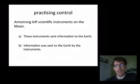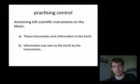Moving on. Armstrong left scientific instruments on the moon. These instruments sent information to the Earth. Information was sent to the Earth by the instruments. Here, clearly, example A, these instruments sent information to the Earth in the active voice, makes better sense than B because the instruments is established and they are the agent, hence the active voice. We could choose the passive, we could take B, but it would be exceedingly odd.